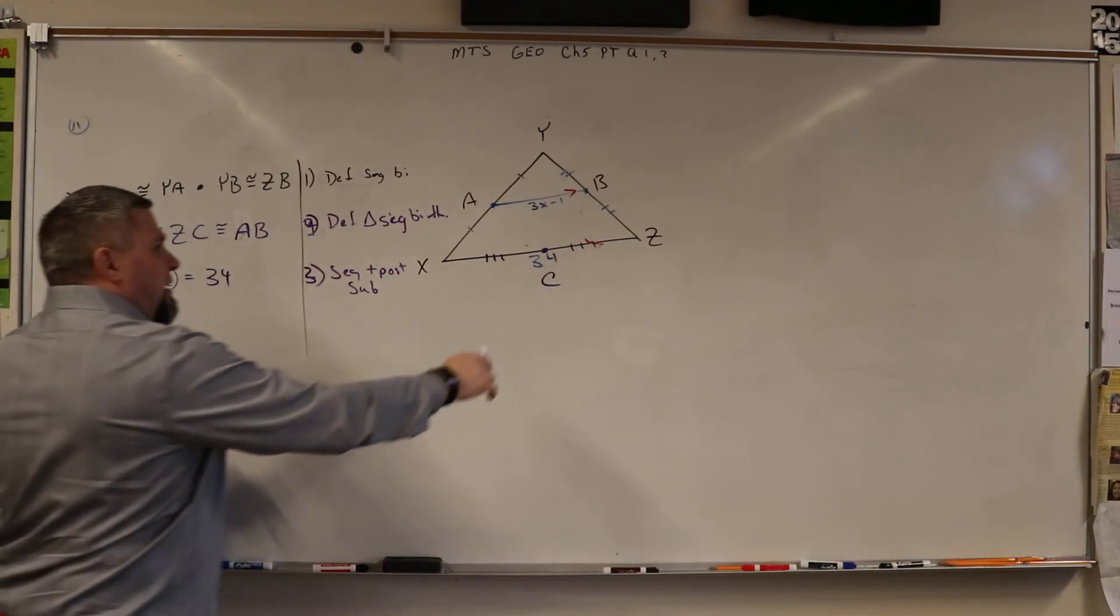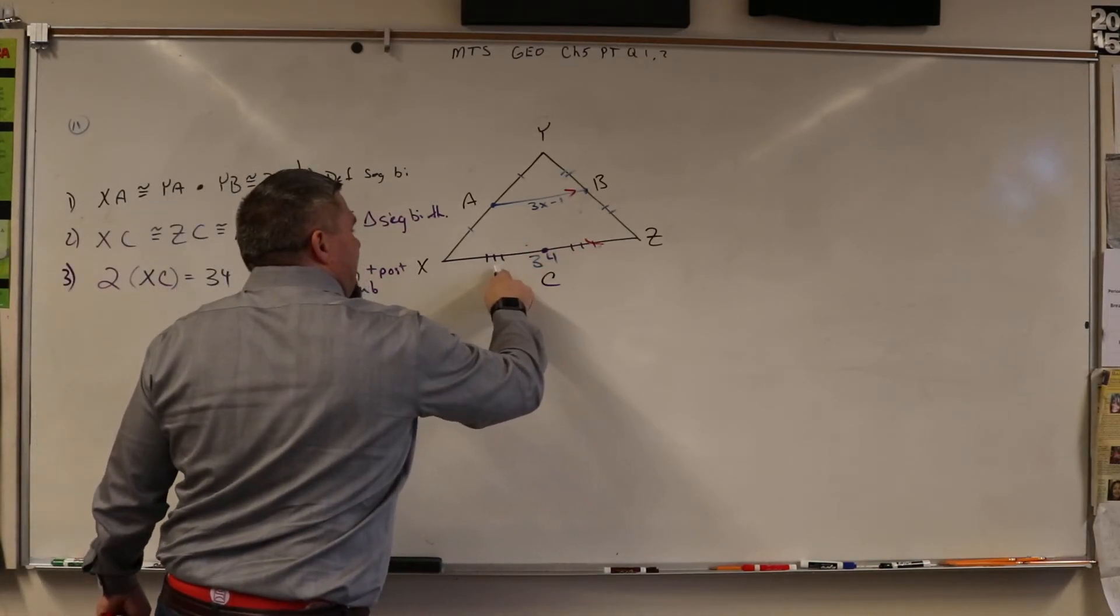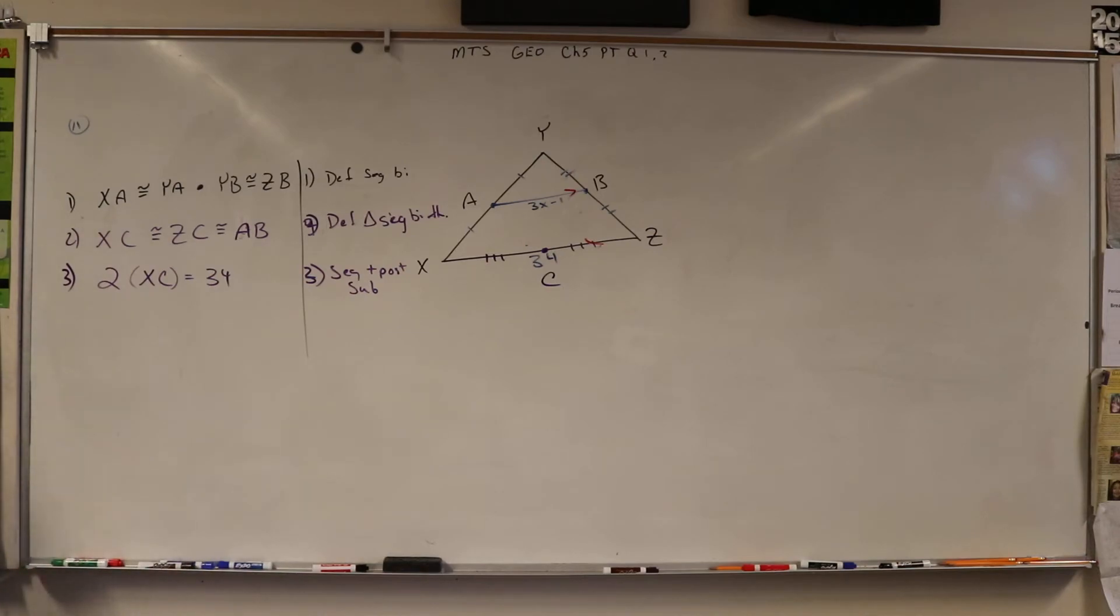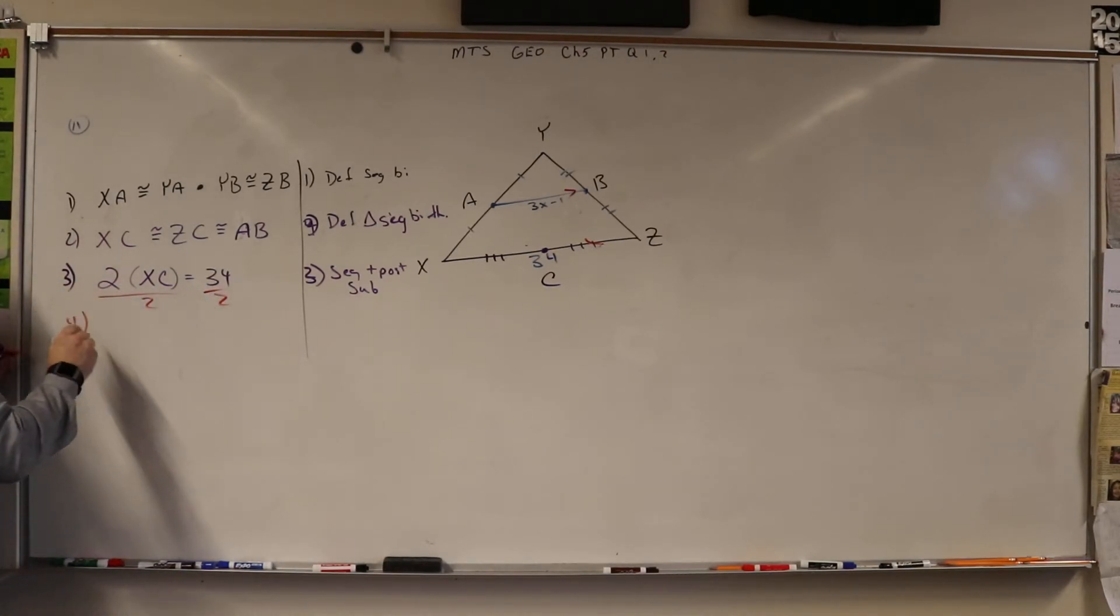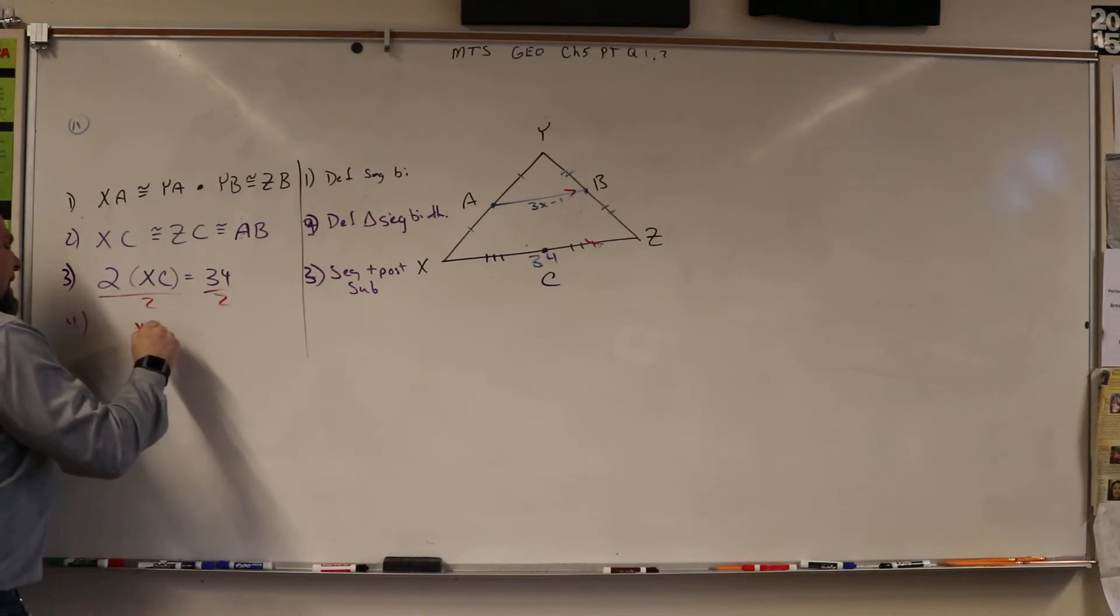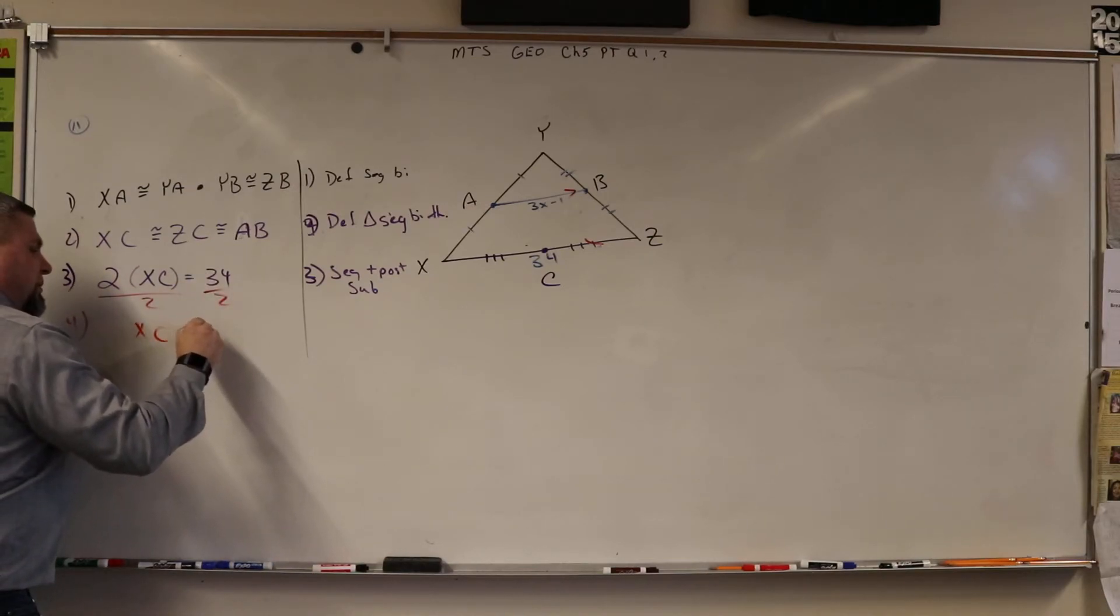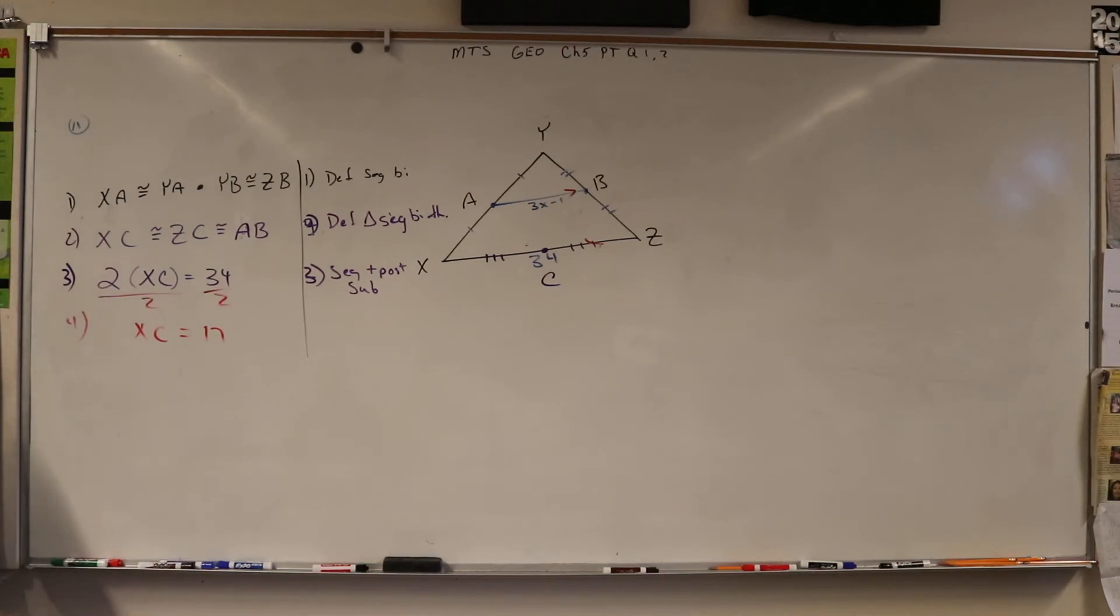And so we're just saying, hey, these two add up to be 34. And that makes sense, because they're both the same, and those two add up to be 34. And the reason why we do that is so I can divide by 2 and get that XC is equal to 17.